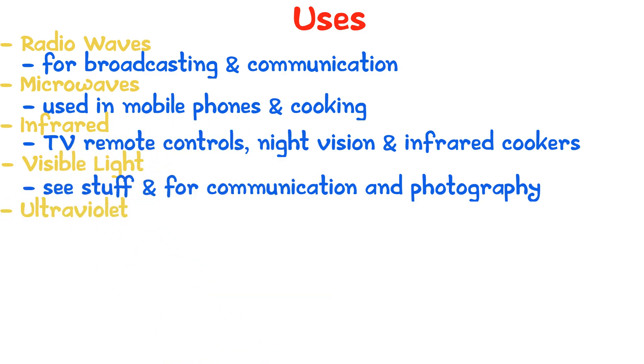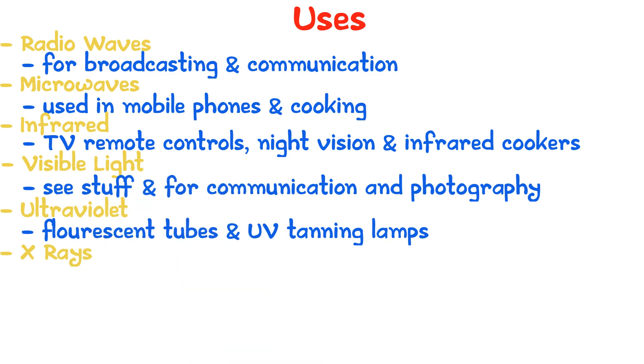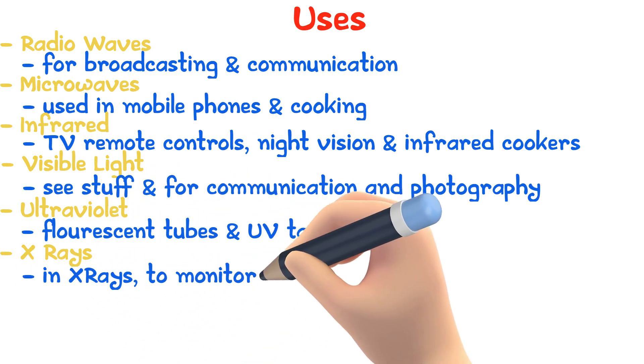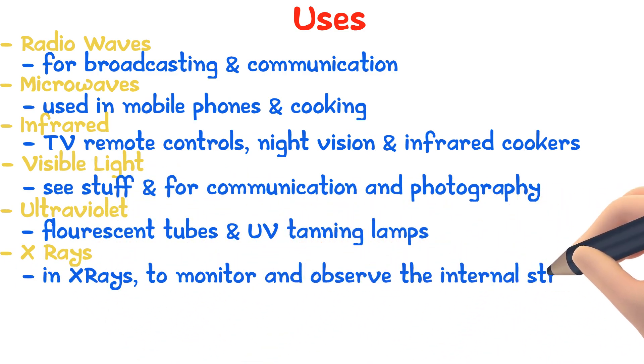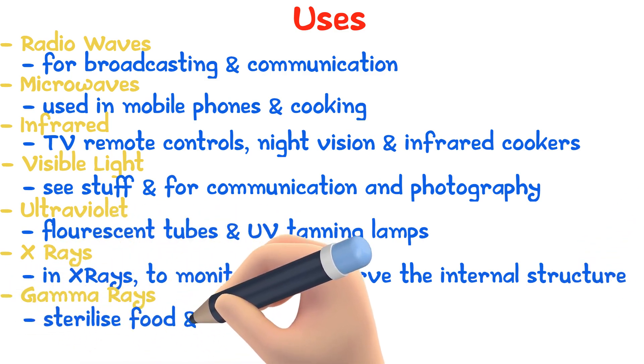Ultraviolet can be used in fluorescent tubes and UV tanning lamps. X-rays are used to monitor and observe the internal structure of objects. Gamma rays can be used to sterilize food and medical equipment.